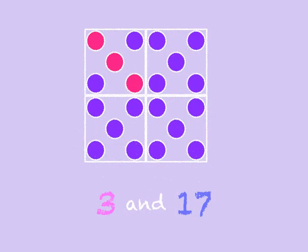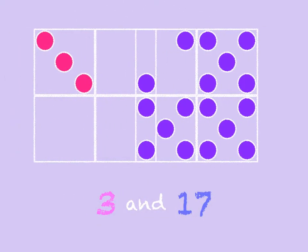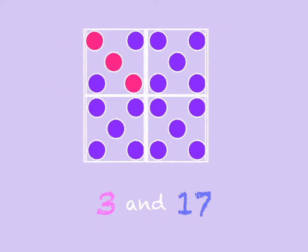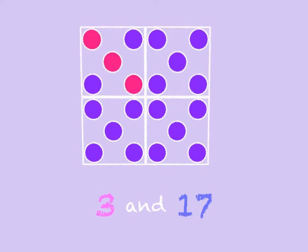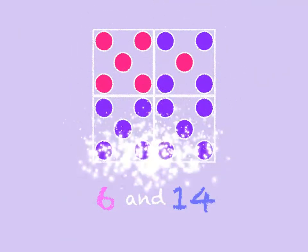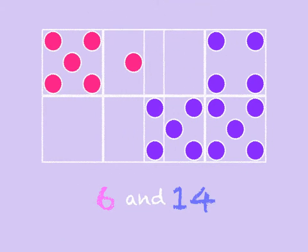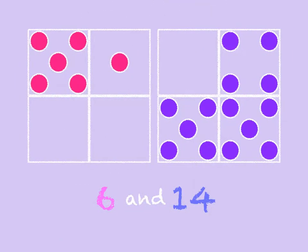Three and seventeen. Three and seventeen make 20. Six and fourteen. Six and fourteen make 20.